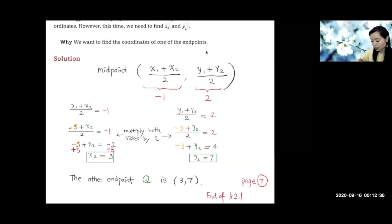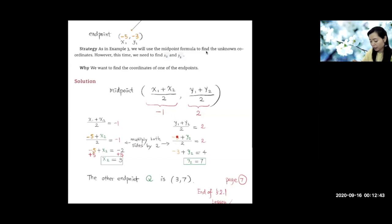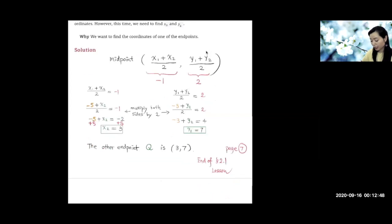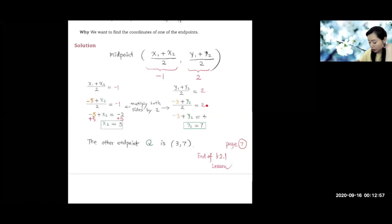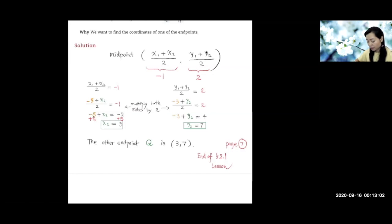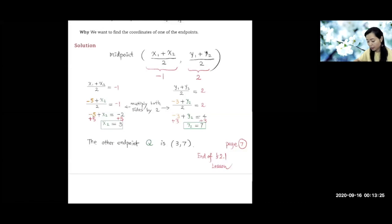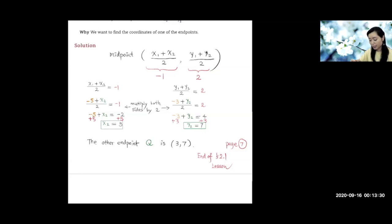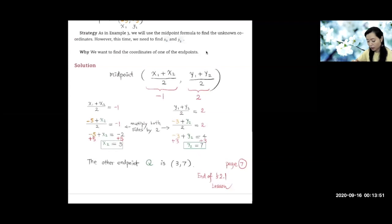Similarly, we substitute y1 = −3 into the y-coordinate equation: y1 plus y2 over 2 equals 2. Multiply both sides by 2, so −3 plus y2 equals 4. Adding 3 to both sides, y2 equals 7. So the other endpoint Q is (3, 7) — x-coordinate 3, y-coordinate 7. Notice that in this problem, the midpoint is given as (−1, 2) and you need to find x2 and y2, so use the formula and solve for x2 and y2.